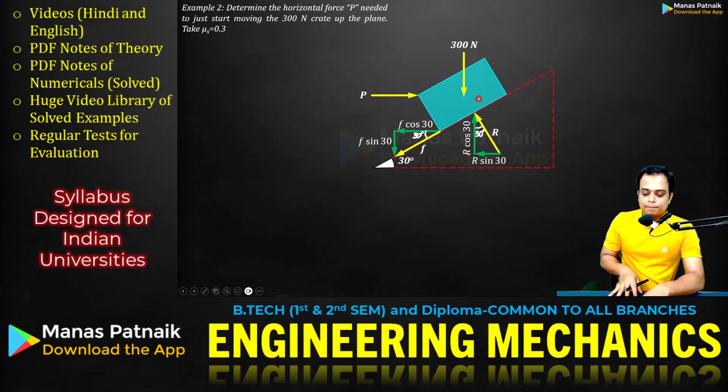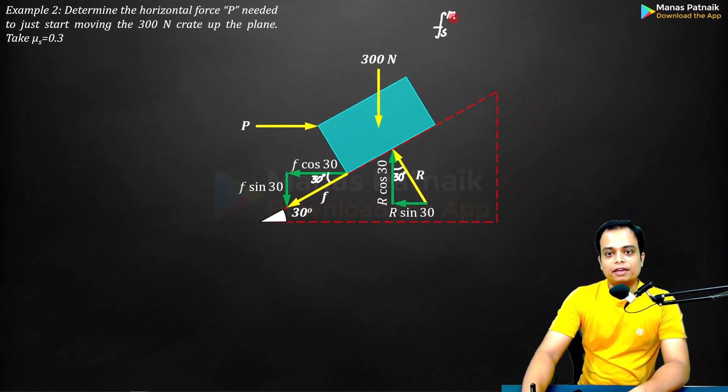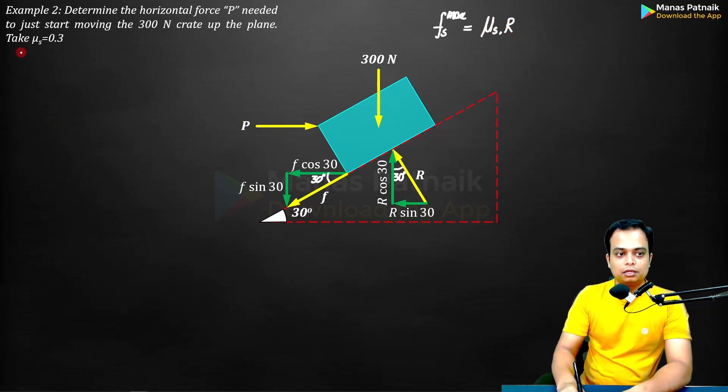It is a case of limiting friction and whenever we talk about limiting friction we are going to use this formula. F_s_max is going to be equal to μ_s times R. How to approach? The approach is very simple: go for summation of all the forces in x direction equal to zero.